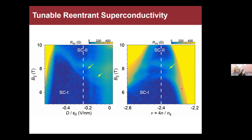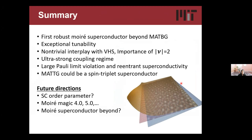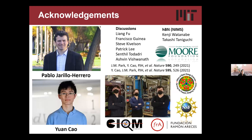In summary, I have shown that this magic-angle twisted trilayer graphene system is a new robust moiré superconductor with exceptional tunability. We could reach the ultra-strong coupling regime of superconductivity and saw that the Pauli limit is largely violated everywhere in the phase space. There is also re-entrant superconductivity in certain phases, which suggests this system could have possible spin-triplet pairing, although we didn't directly show this. In the future, it would be meaningful to more directly study the superconducting order parameter and see if there are other moiré systems that exhibit other robust superconductivity, so that we can better understand the origin of such superconductivity. I would like to thank my advisor Pablo, my collaborator Yuan, many meaningful discussions with our theory friends, and all these funding agencies including the CIQM. Thank you.